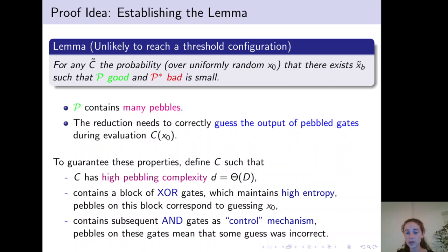we define C to contain a block of XOR gates which maintains high entropy. And pebbles on this block correspond to guessing the input x0. Furthermore, our circuit contains subsequent AND gates that serve as some control mechanism. Pebbles on these gates mean that some guess on the previous XOR block was incorrect.